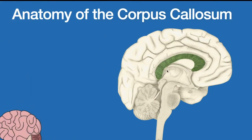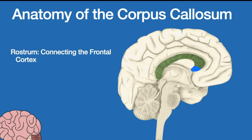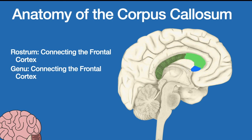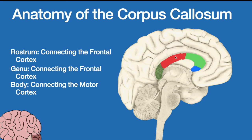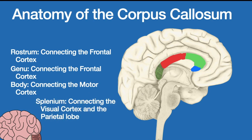Now let's talk about the anatomy of the corpus callosum. This green part is the corpus callosum, and it is divided into four sub-regions. The first is the rostrum — this part over here — which means 'bird's beak' because it is shaped like one. It connects the frontal cortex of both hemispheres. Then we have the genu, which also connects the frontal cortexes and is named genu because genu means 'knee' and it kind of looks like one. Then there is the body, sometimes called the trunk, which connects the motor cortexes involved in motor functions. Finally, there is the splenium — this yellow part — which connects the visual cortexes and the parietal lobes.